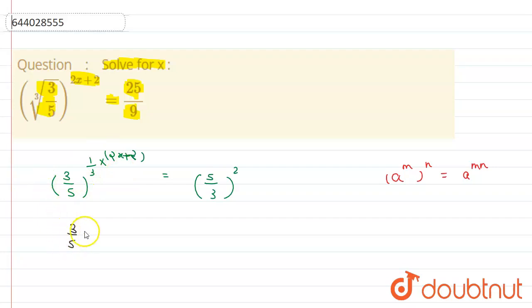Now (3/5) to the power minus 2. So let's write this: (3/5)^((2x+2)/3) equals (5/3)^2. We can write (5/3)^2 as (3/5)^(-2).